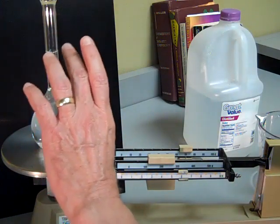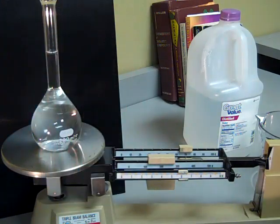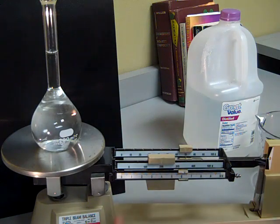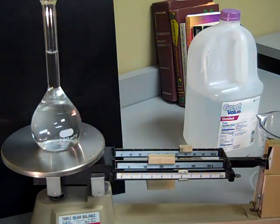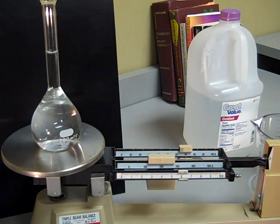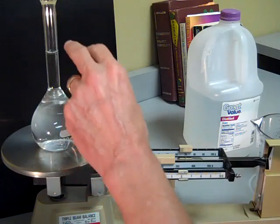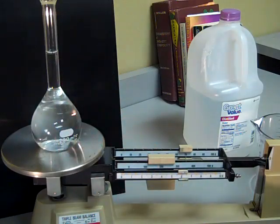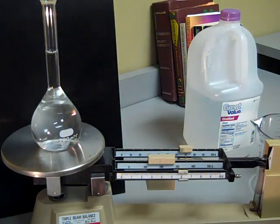It weighs less than it should for 200 mils. What we can do now is add each drop and count the number of drops. Two drops is a tenth of a mil. So we're going to see how many more extra mils we actually have of solution to get the 200 gram mark.